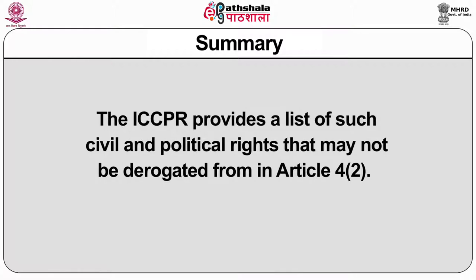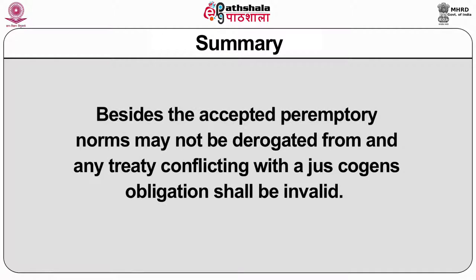Besides, the accepted peremptory norms may not be derogated from, and any treaty conflicting with a jus cogens obligation shall be invalid. Further, the HRC through its authoritative interpretation has given Article 4 of the ICCPR a broader and more expansive meaning, and has enlarged the scope of protections that individuals enjoy without the fear that states may derogate from their obligations to guarantee those rights. Thank you.